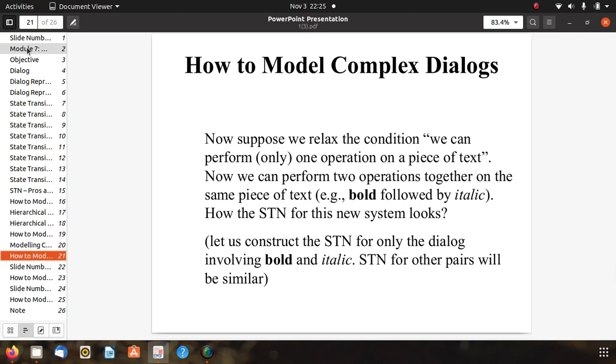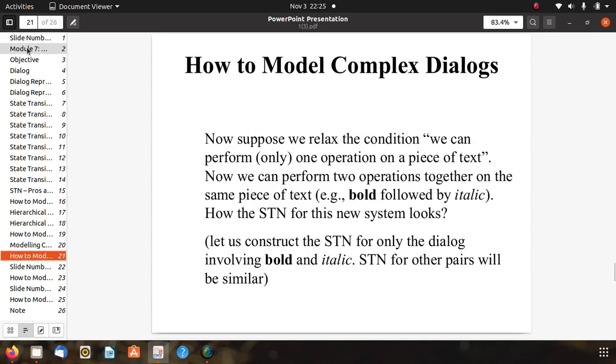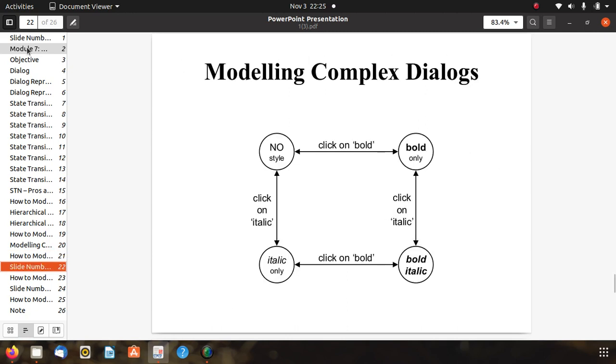Now suppose we relax the condition. We can perform two operations together on the same piece of text, bold followed by italic. How does the STN for this new system look? Earlier we had a simple one. Now let us construct the STN related to both tasks.